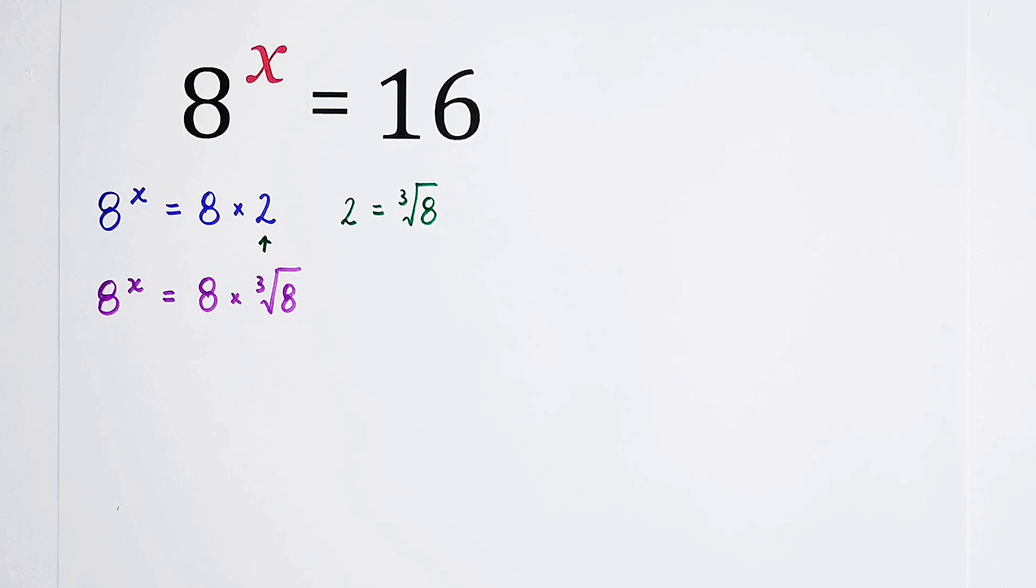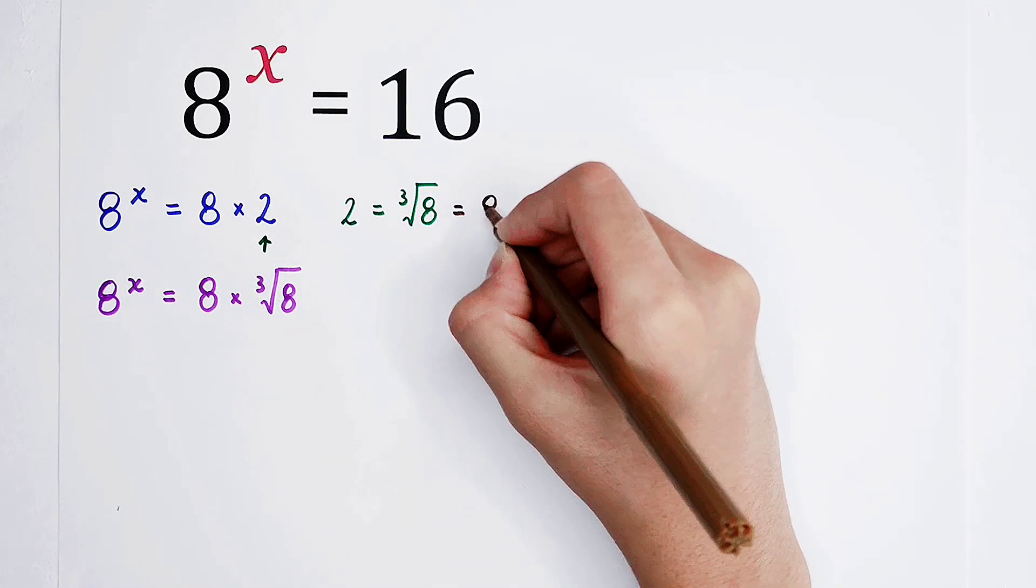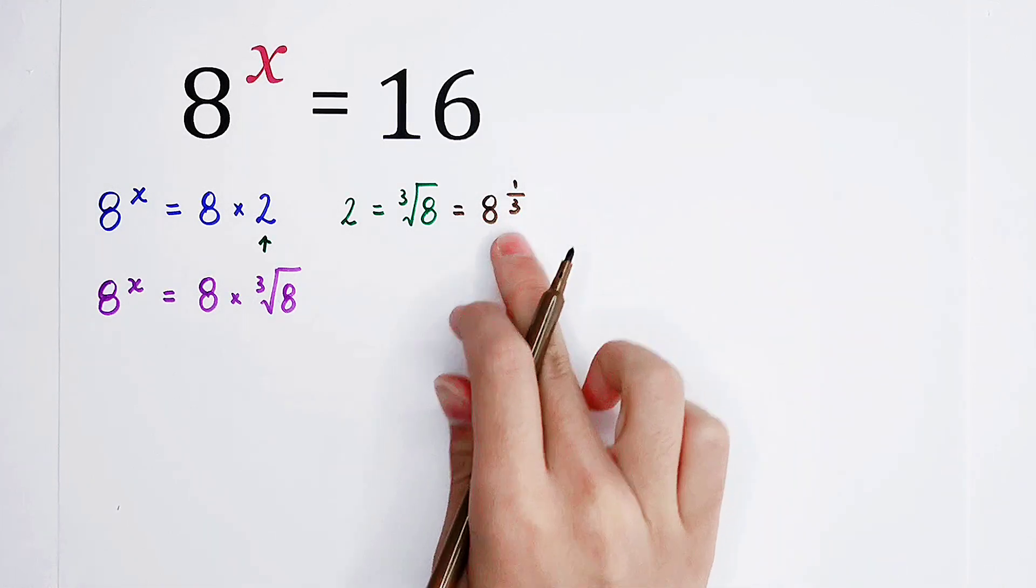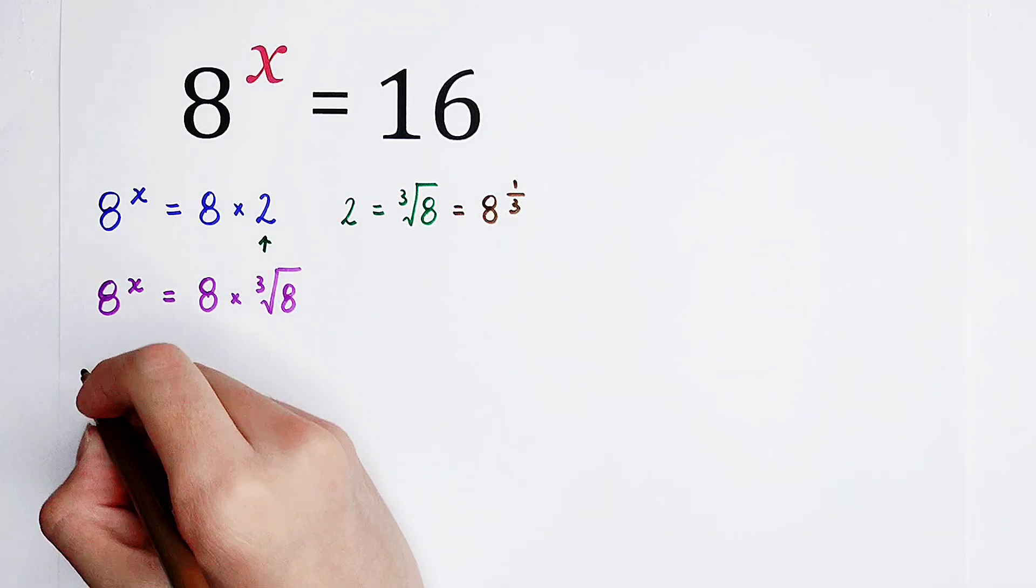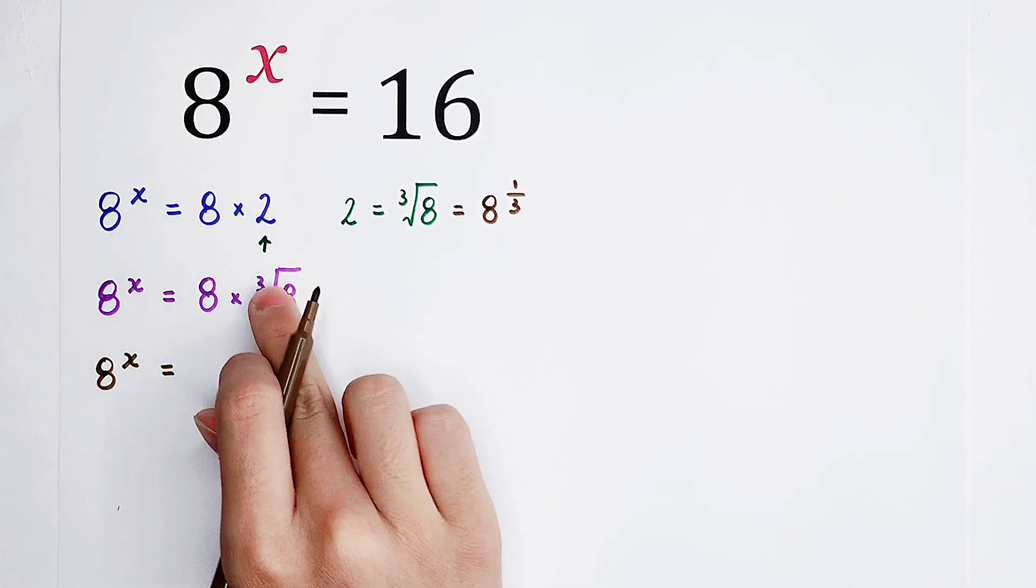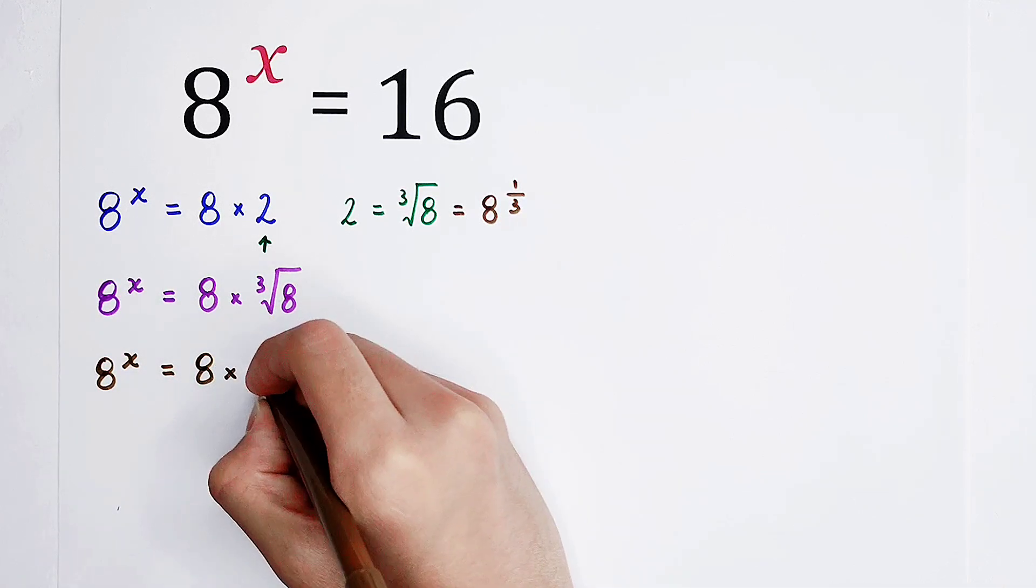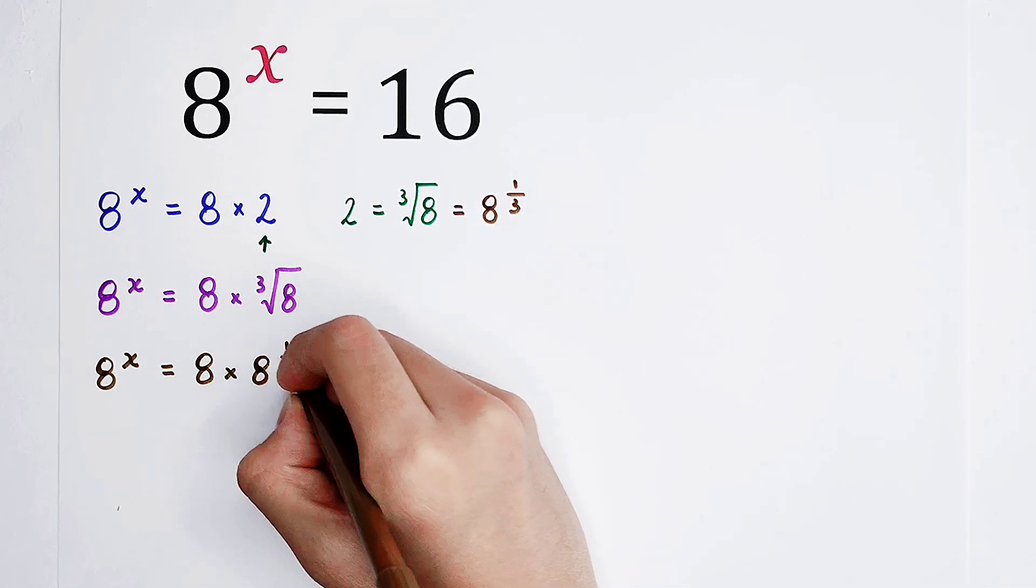8 to the power of x is equal to 8 times the third root of 8. Then, the third root of 8 can also be written as 8 to the power of 1 over 3. So this can be written as 8 to the power of 1 over 3.